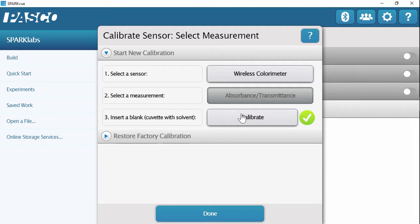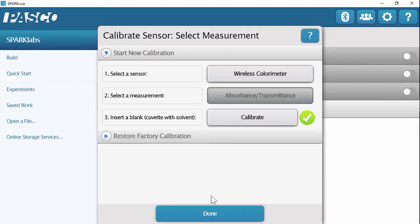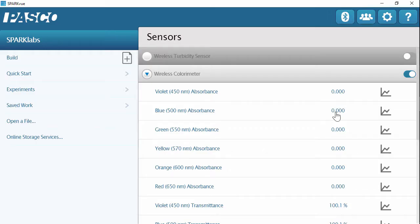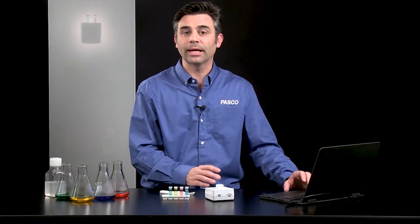And then once it's calibrated, I get this green checkmark. So again, a nice indicator for students and for you to know that something happened and this is calibrated. I'm going to hit done. And since I calibrated the colorimeter, my colorimeter measurements pop up on the home screen. And they're reading zeros for the absorbance and 100% for the transmittance, which is what you would expect for the calibration.